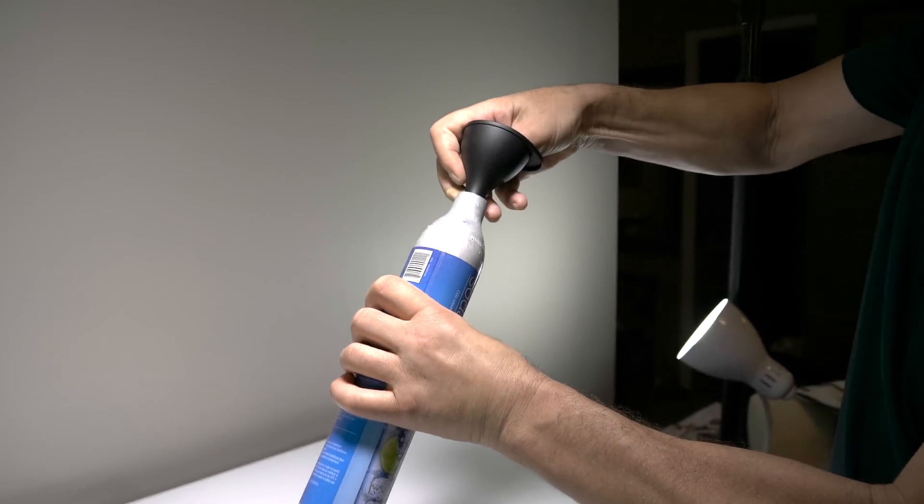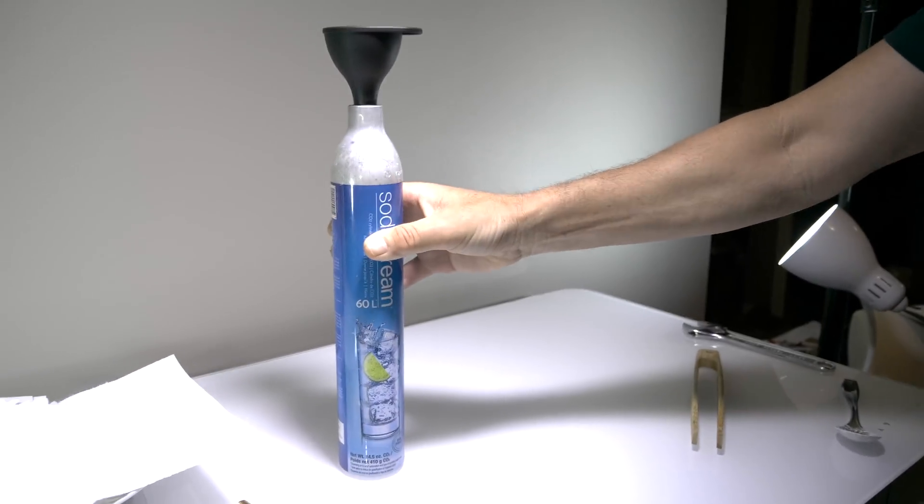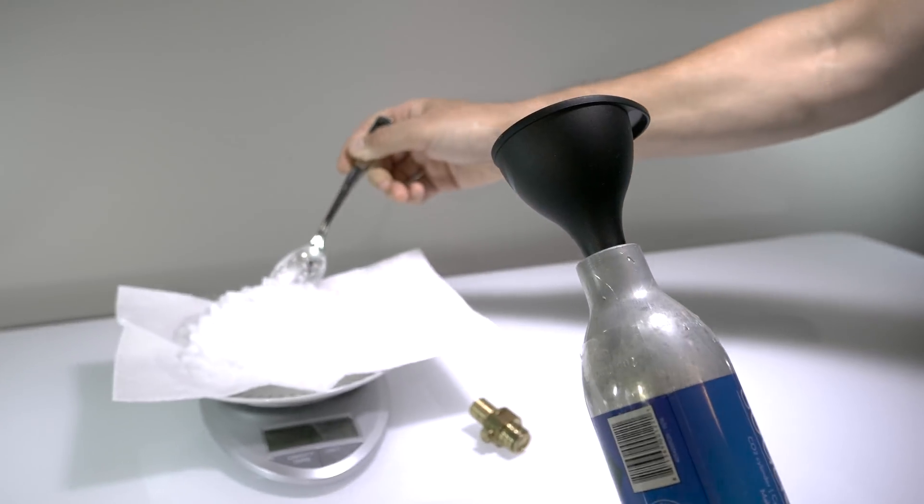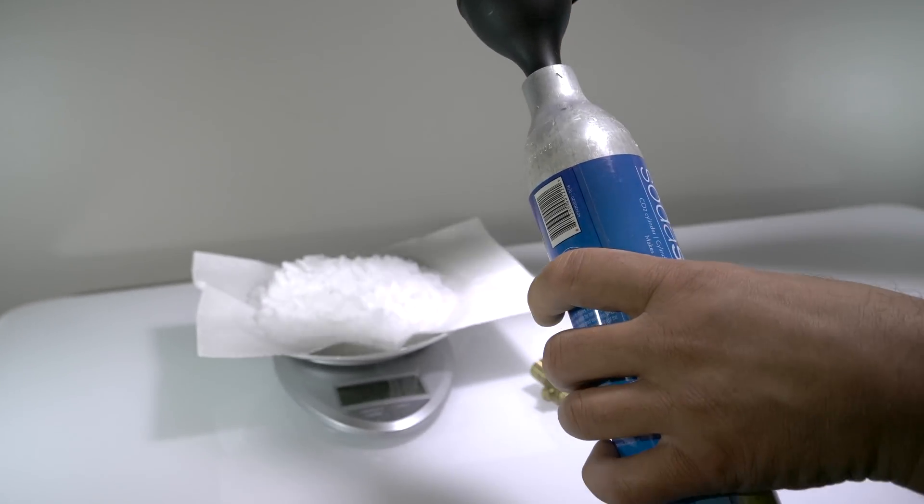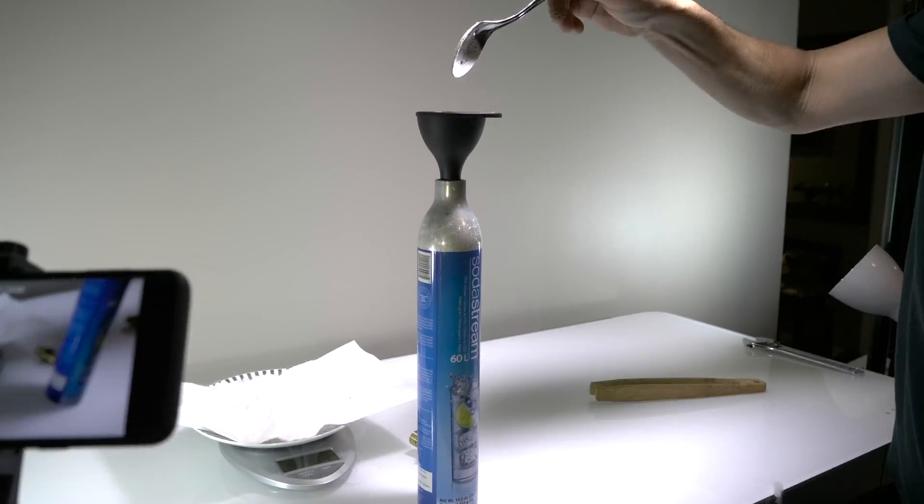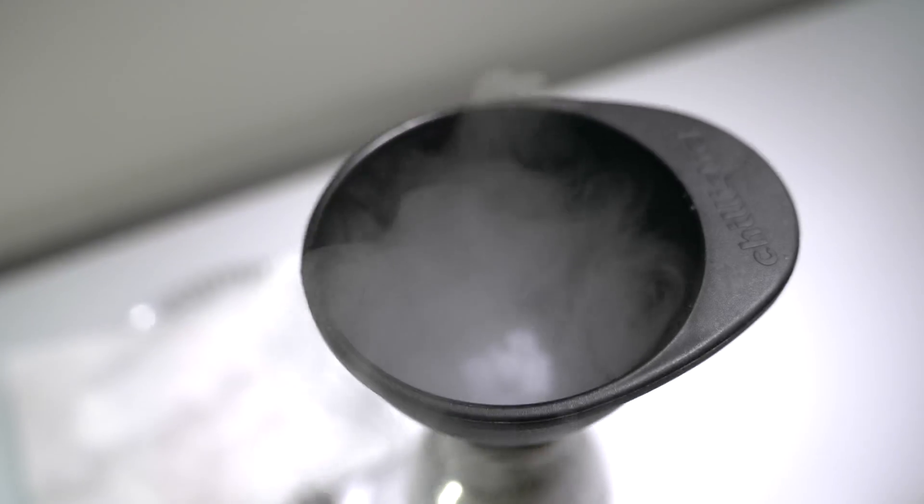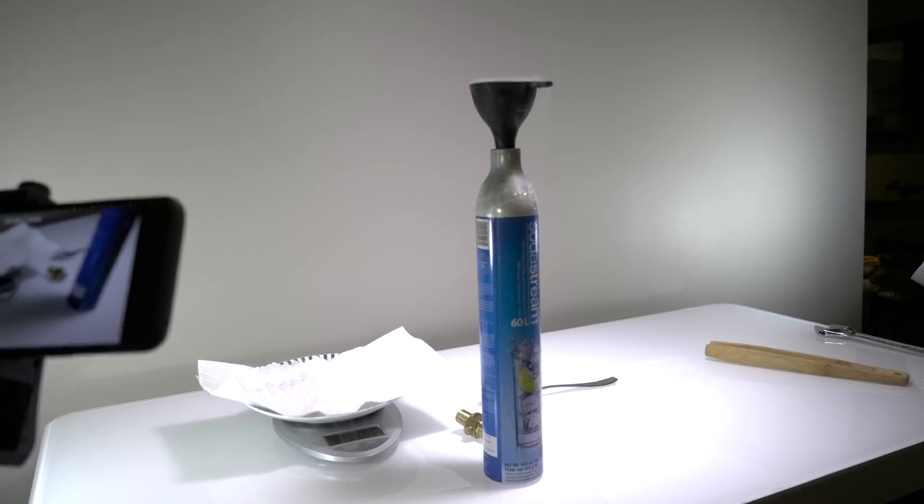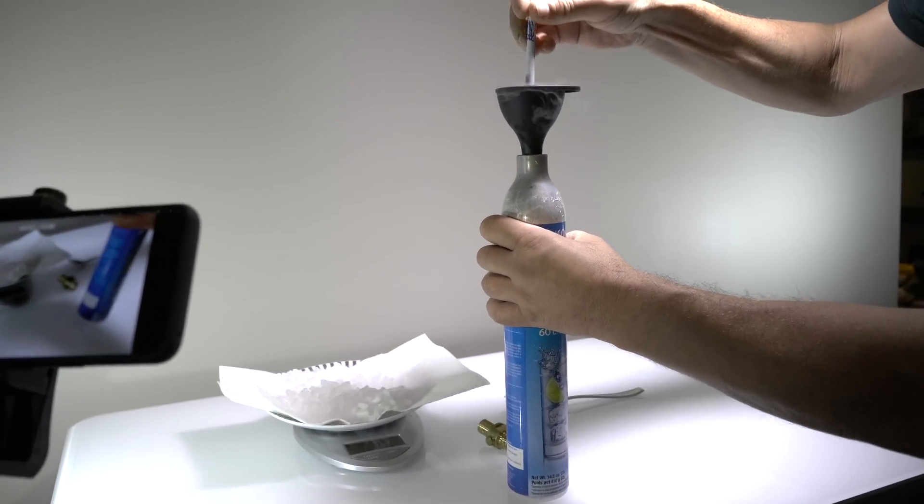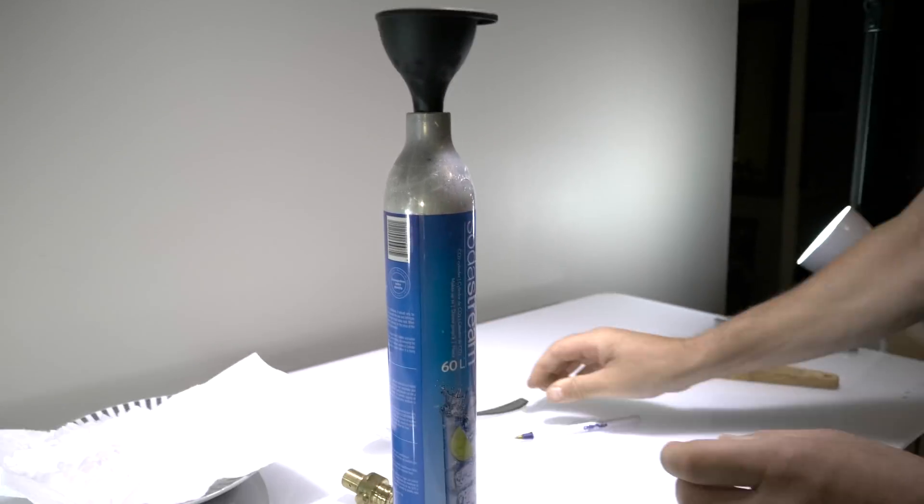So from here we put the funnel inside here. Like so. And we just scoop this stuff out, put it inside here. Very time consuming. Takes a long time. So sometimes it gets jammed up, you just got to get a pen or pencil and push it down. That's good. Did it go down? Yep.